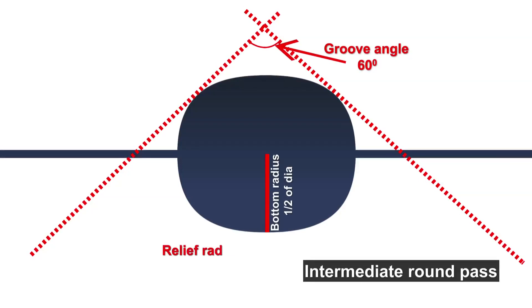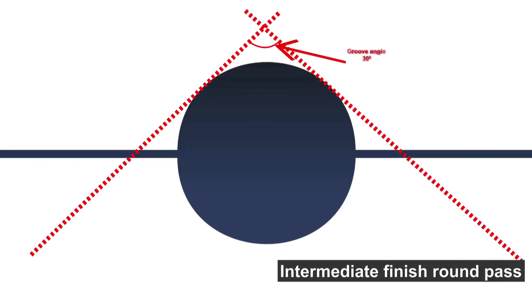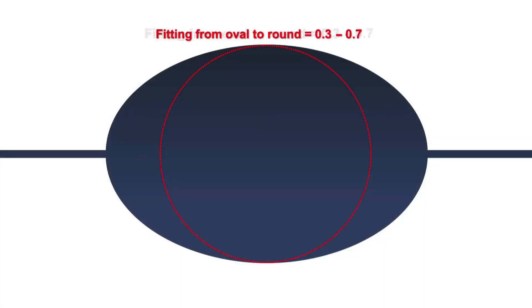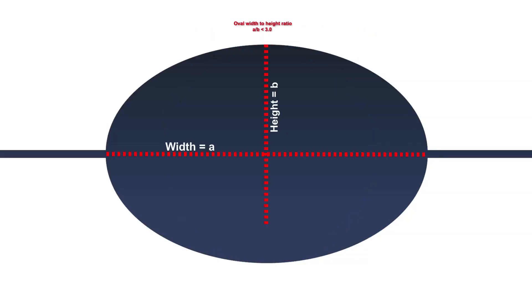Relief radius for rounds is one fifth of the bottom radius. Groove angle for intermediate finish round pass should be 30 degrees. Relief radius for rounds in finish pass should be 1.5. Fitting from oval to round should be 0.3 to 0.7. For oval, width to height ratio should be less than 3.